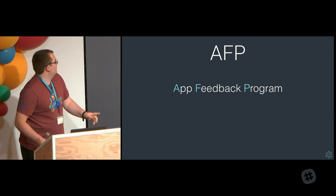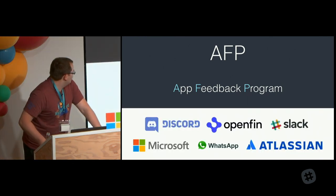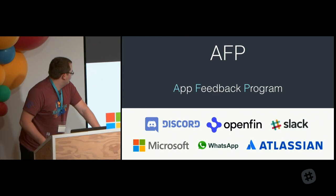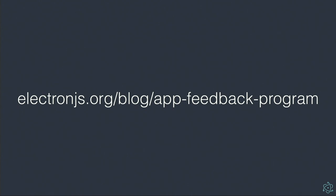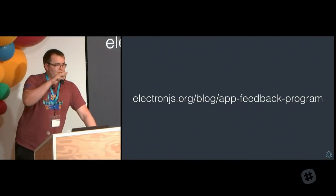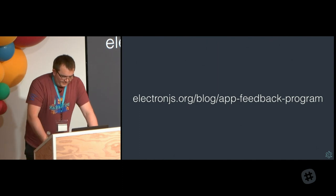Current members who have given permission to be named are Discord, Microsoft, OpenFin, WhatsApp, Slack, and Atlassian — and there are more who've chosen to remain anonymous. A massive shout-out to these people: a lot of the bug fixes in 4.0 and 3.0 were largely thanks to them trying out releases and finding issues before we did. You can find out more about the app feedback program and the requirements for joining in our AFP blog post, or just go to the Electron website — it's about the third blog post down.